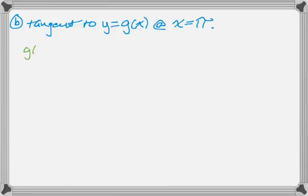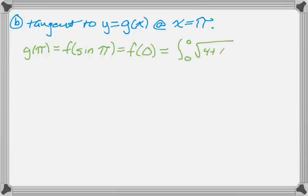For the next question, we are asked to find the equation of the tangent line to y equals g of x. At x equals pi, so we need to know the point and we need to know the slope. So the point will be g of pi, which is f of the sine of pi, which is, the sine of pi is 0, so f of 0. And that means that we're really doing this integral. And then we know the integral from 0 to 0 of anything is just going to be 0.